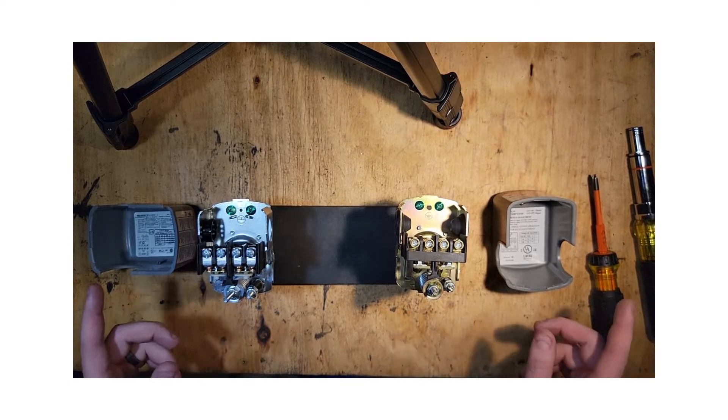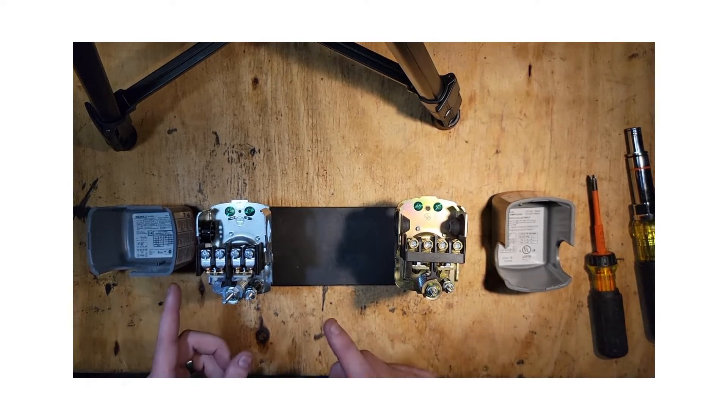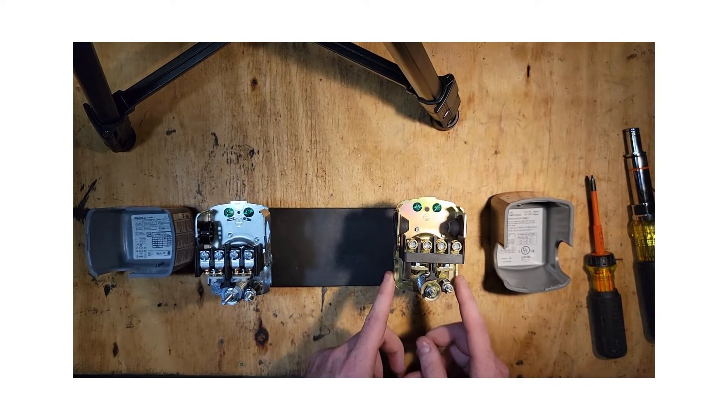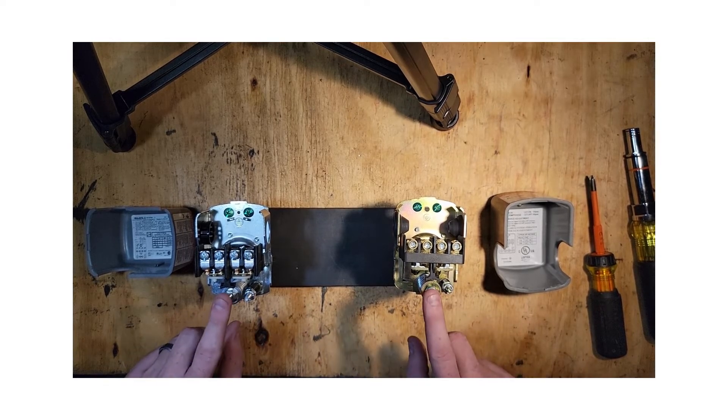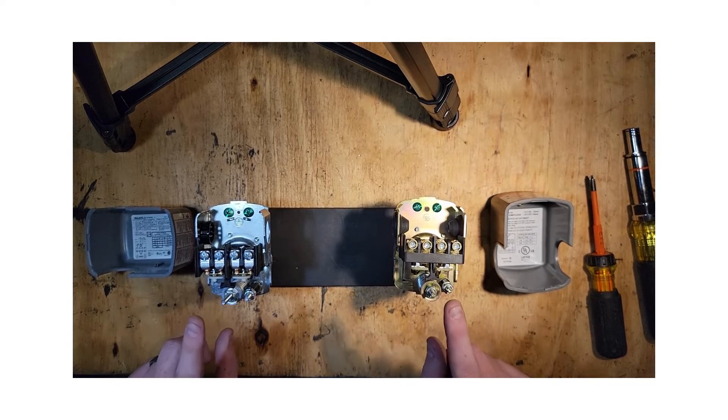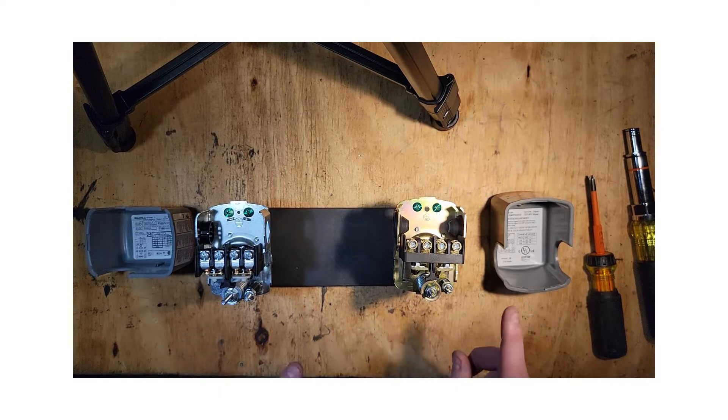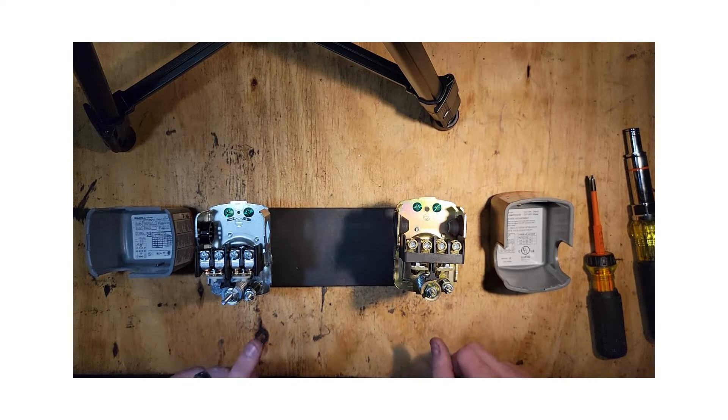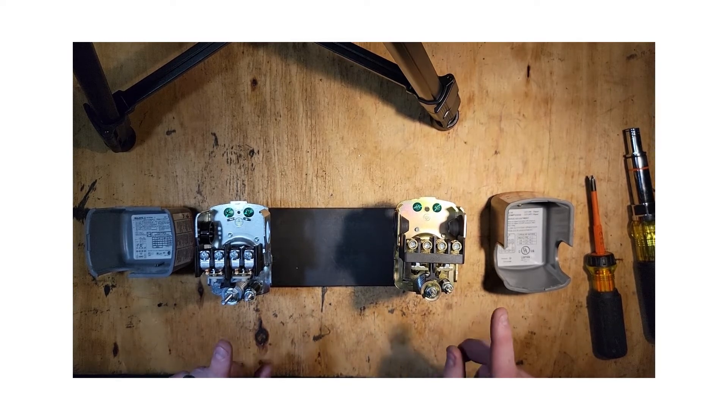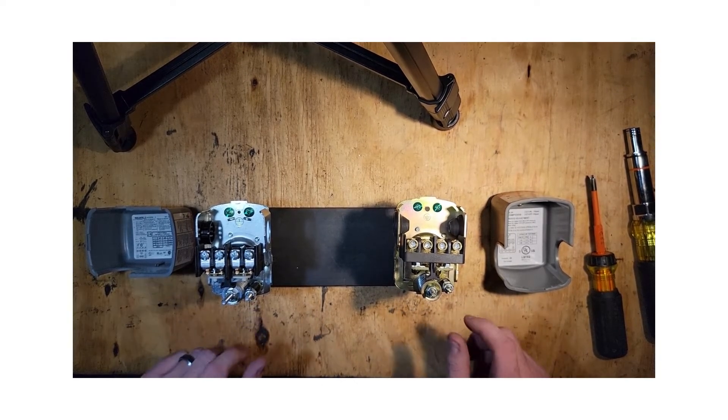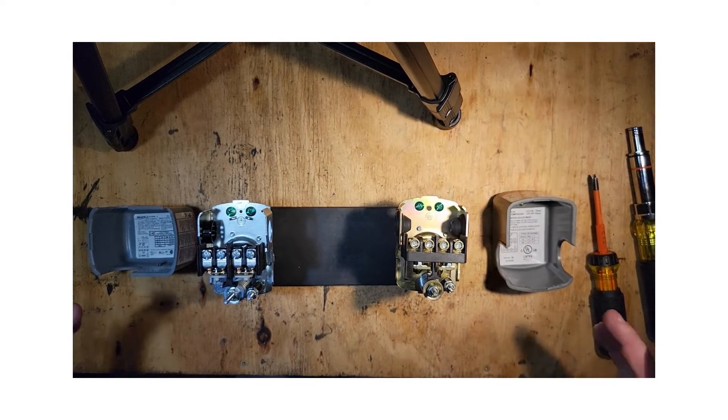So again, if you want to adjust the range from 40 to 60 or 30 to 50 equally, you adjust this. Tightening it increases, loosening it decreases. And if I want to only change my turn off pressure, I adjust this nut and again, tightening increases it and loosening it decreases it.